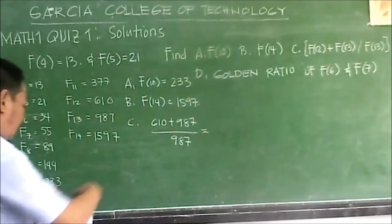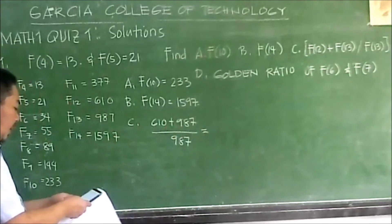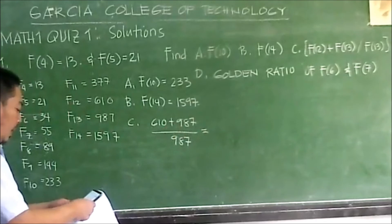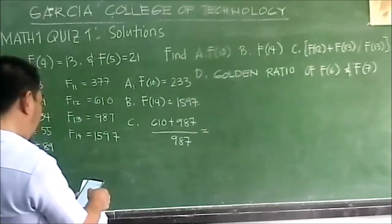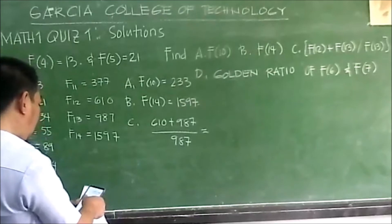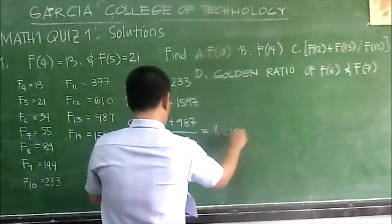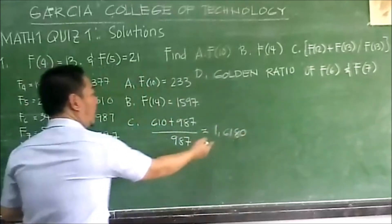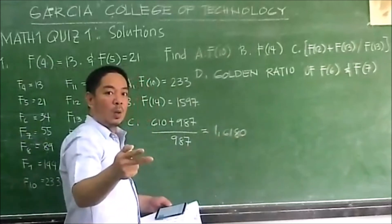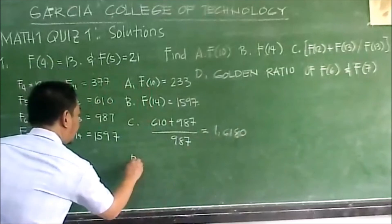Letter C, you shall calculate. Let's compute. Your answer is 610 plus 987 divided by 987, and your answer is 1.6180 or approximately equal to our golden ratio.